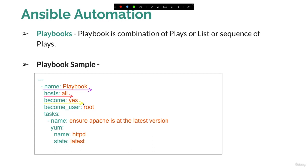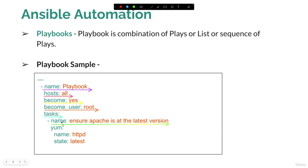The become option must be set to yes. You also get the option to define become_underscore_user to specify which user should execute the playbook. If you do not define become_user and just set become to yes, it will automatically switch to the root user. Then you define tasks and the name of the task — the name is again optional.